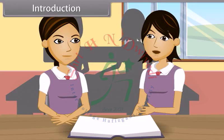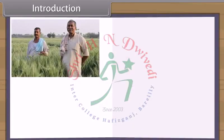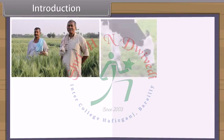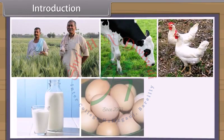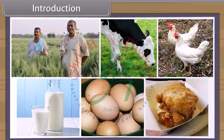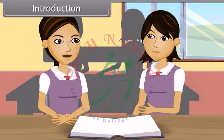As the human population of our country is increasing, in addition to an increase in crop production, we also need to increase animal production to meet the demand for milk, eggs and meat. Therefore, it is necessary to increase our production efficiency for livestock.